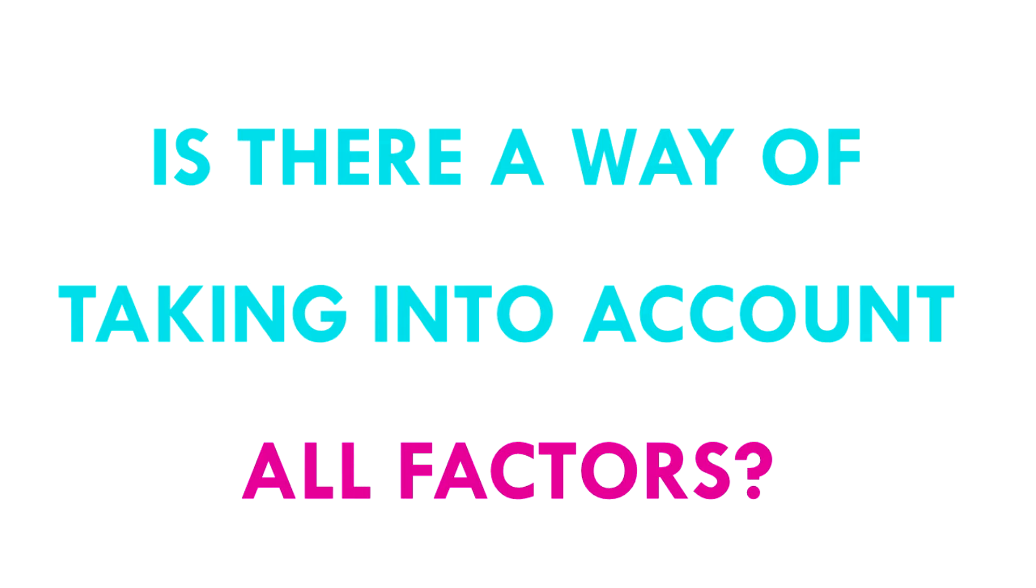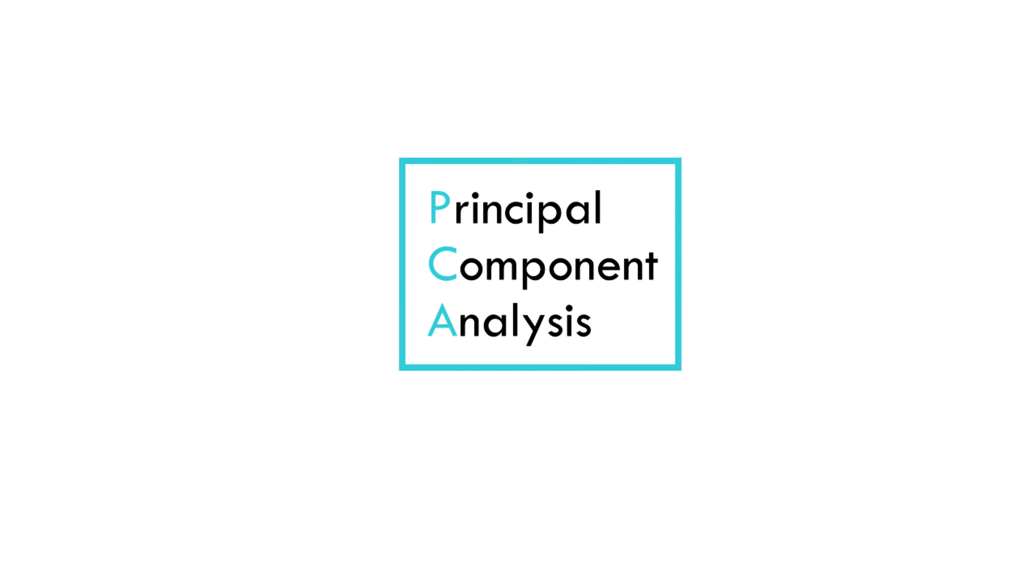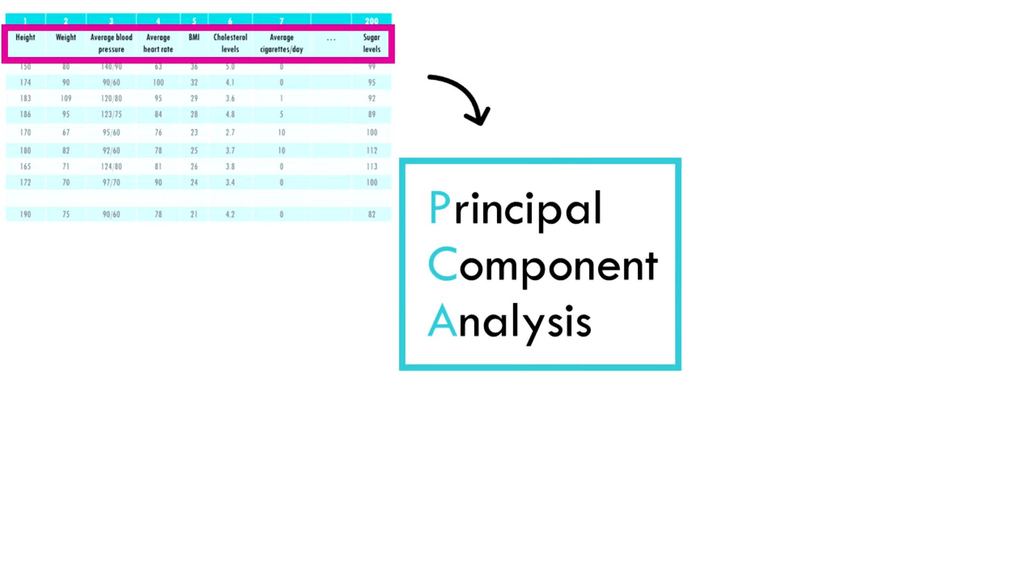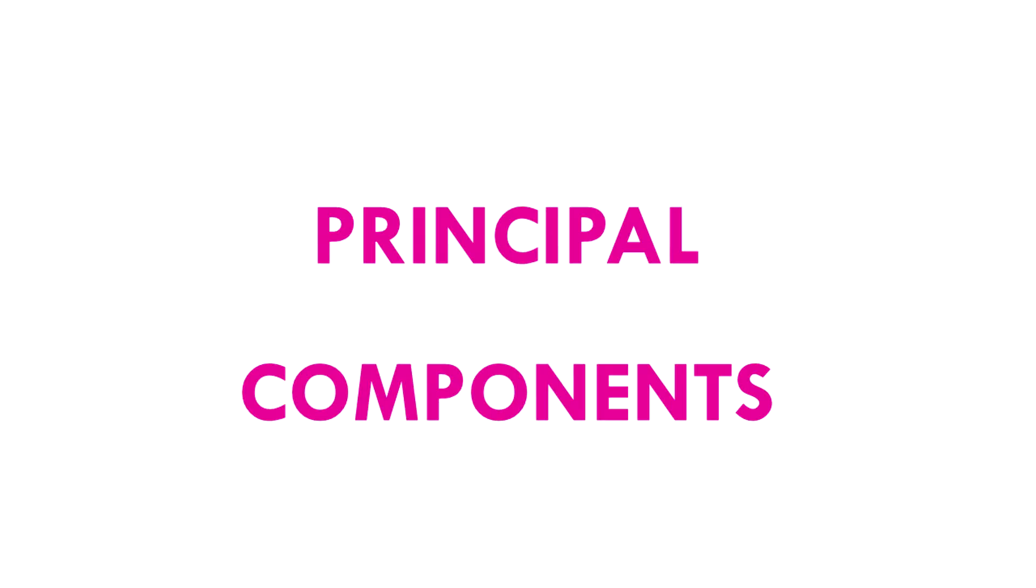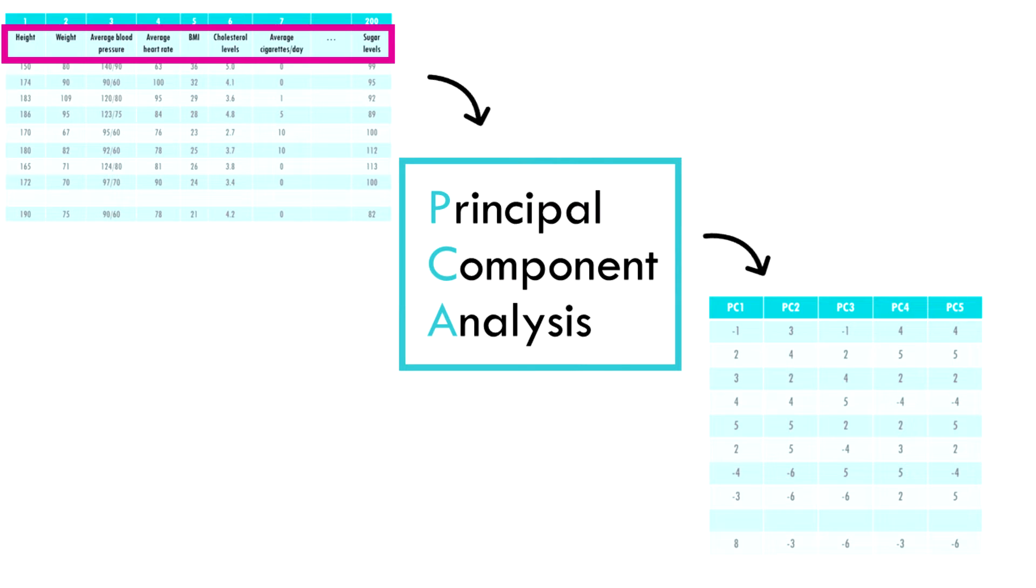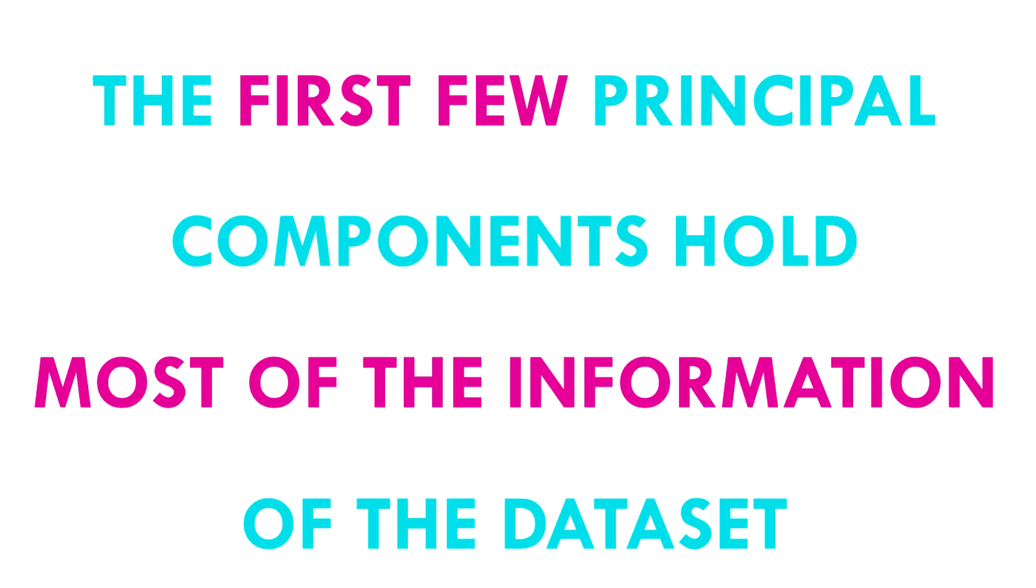Is there a way of taking into account all factors? An amazing solution is principal component analysis, or PCA for short. PCA takes all of the factors, combines them in a smart way, and produces new factors called principal components. And it does that so if you focus on just the first few components, you will keep most of the information from the dataset.